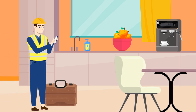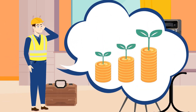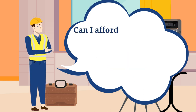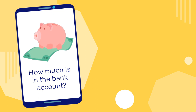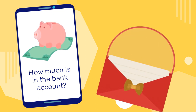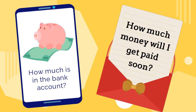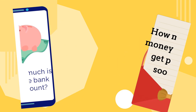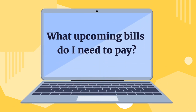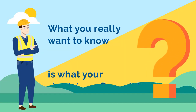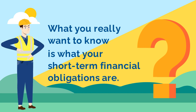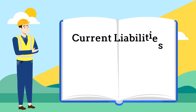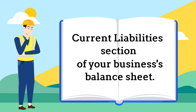Let's say you run your own plumbing business and you want to know whether your finances are in good enough shape for you to safely take a holiday. Apart from checking how much money you have in your bank account and how much your most recent clients should pay you soon, you also want to know what kind of bills you need to pay over the next few months. What you really want to know is what your short-term financial obligations are, and the best place to find this is in the current liabilities section of your business's balance sheet.